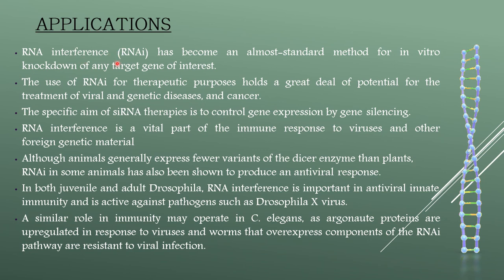Applications of regulatory RNAs: RNA interference has become an almost standard method for in vitro knockdown of any target gene of interest. The use of RNAi for therapeutic purposes holds great potential for treatment of viral and genetic diseases and also in cancer. A specific aim of siRNA therapies is to control gene expression by gene silencing. RNA interference is a vital part of the immune response to viruses and other foreign genetic material. Although animals generally express fewer variants of the Dicer enzyme than plants, RNAi in some animals has also been shown to produce an antiviral response.